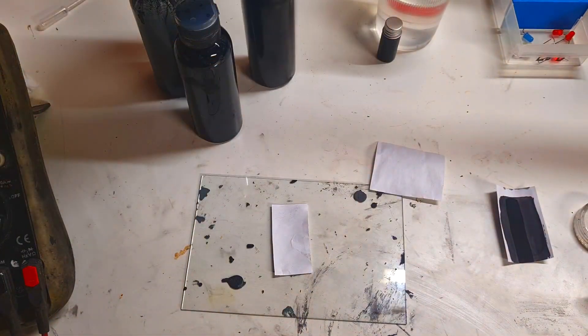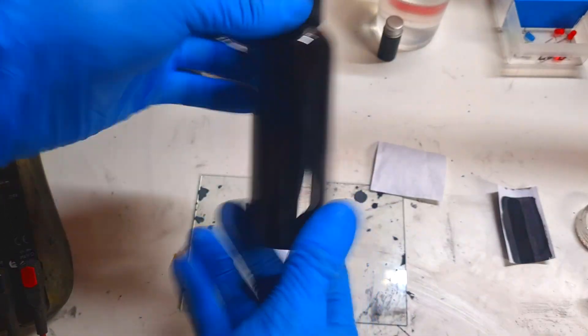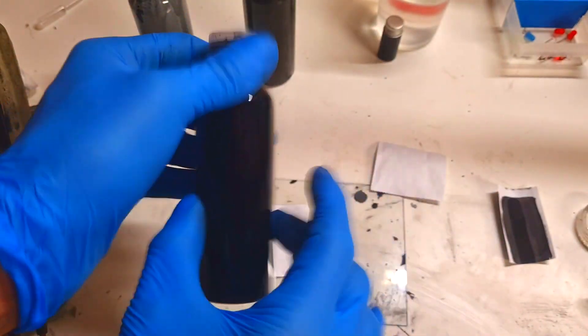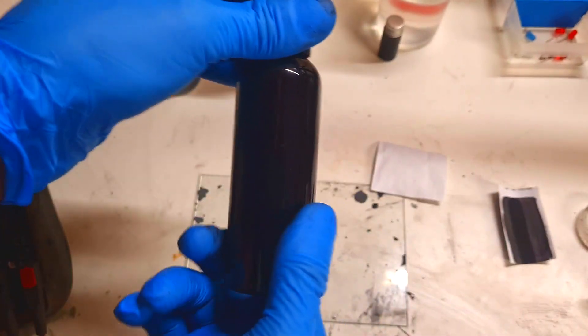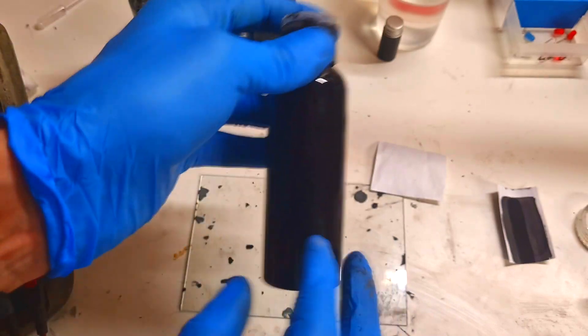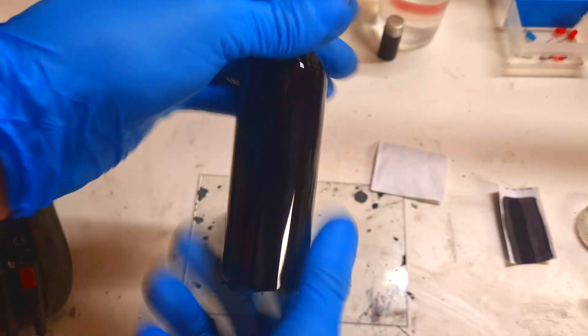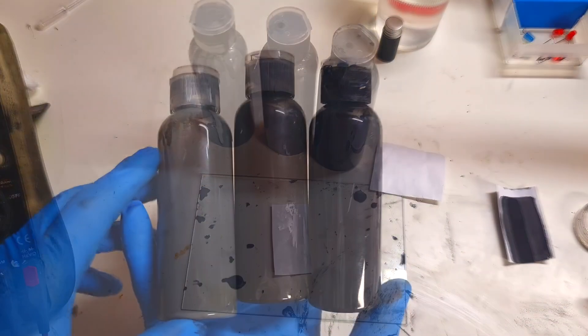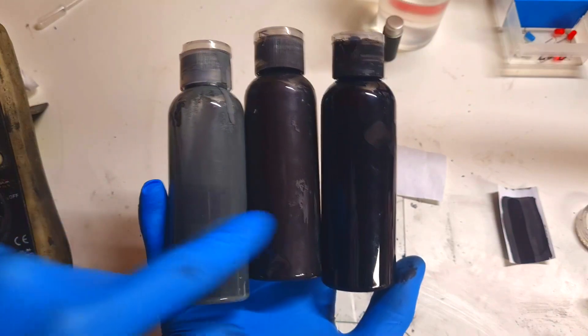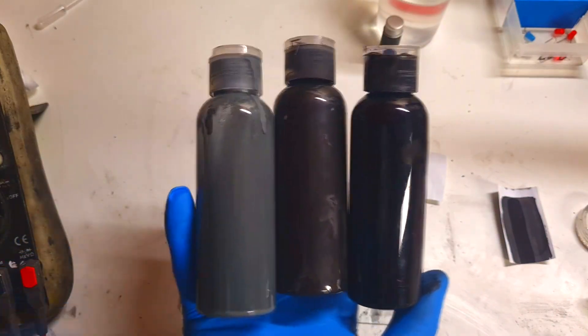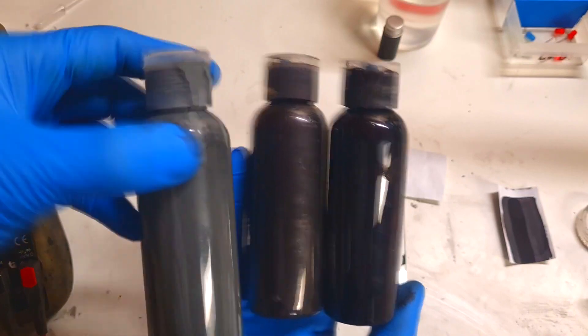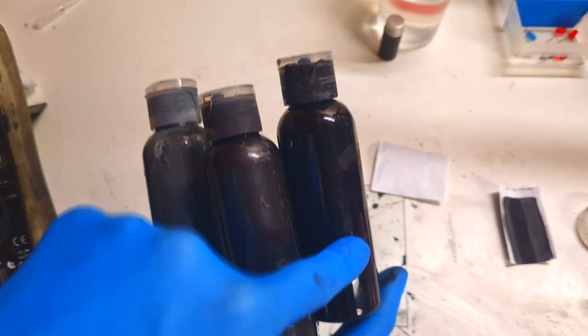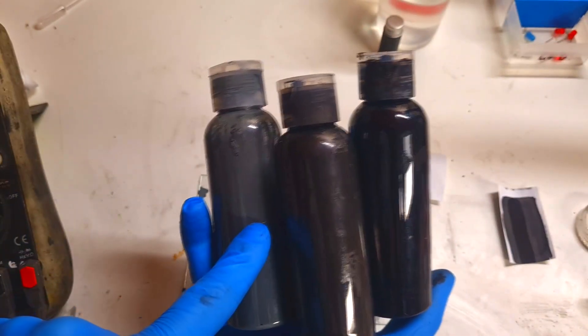The third ink is the current collector ink. This current collector ink is made using ethanol for the solvent, PVB for the binder, and some carbon black for the conductive material. You can see the difference between the colors. This is the zinc one, the graphite one, and the carbon black one. The current collector ink, the cathode ink, and the anode ink.